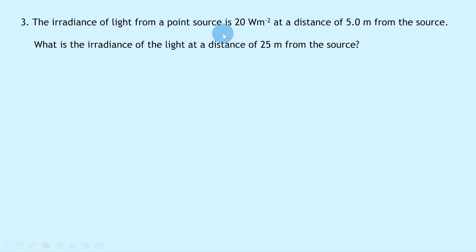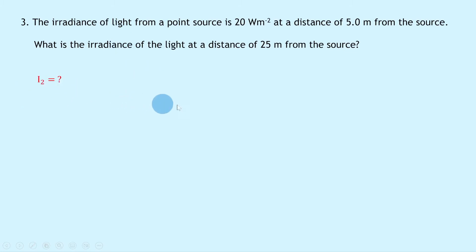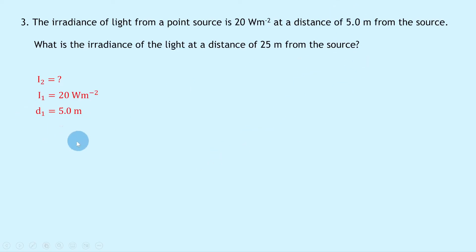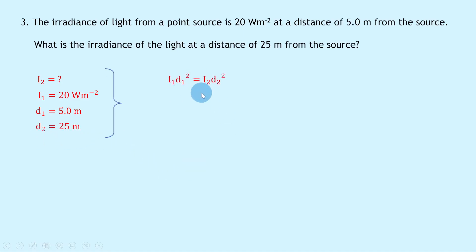Question 3 says: the irradiance of light from a point source is 20 watts per square meter at a distance of 5.0 meters from the source. What is the irradiance at a distance of 25 meters? We're trying to find I₂. We know I₁ = 20 W/m², d₁ = 5.0 meters, and d₂ = 25 meters.